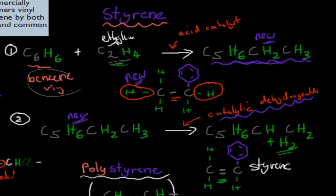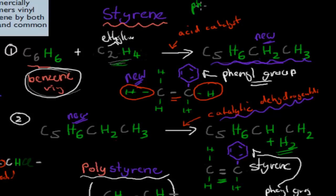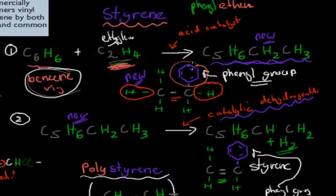Now, when a benzene ring is by itself it's called benzene, but when it's attached to something else it's called a phenyl group. So we still have that phenyl group in our styrene structure. That's why the systematic name is phenylethene: phenyl because of the benzene ring attached, and ethene because we used our original ethylene molecule as the backbone. So phenylethene is the systematic name, and styrene is the common name.